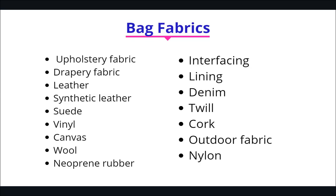Now, moving to bag fabrics: we have upholstery fabric — these are the kind of fabric you use to make your settee or sofa; they are very strong and durable so they are very good for making bags too. We have drapery fabric, which are used to make curtains — those fabrics are also very strong and sturdy, so those types of fabrics will also be good for making bags. We have leather — the real leather from cowhide. We also have synthetic leather which is manufactured. We have suede, vinyl, canvas, and wool.